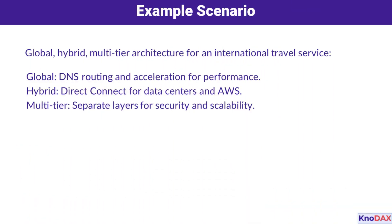To bring it all together, let's look at a real-world example: a global, hybrid, multi-tier architecture for an international travel service. Globally, Route 53 handles DNS routing and acceleration to enhance user experience. In a hybrid setup, Direct Connect links the on-premises data centers with AWS for secure and reliable communication. And with a multi-tier structure, the application layers are securely separated, ensuring scalability and resilience — a comprehensive design tailored for modern, high-demand applications.